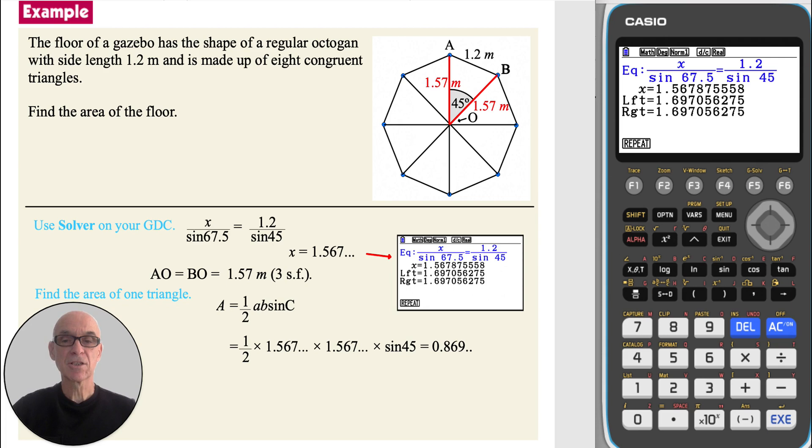And since the floor of the gazebo is made up of eight congruent triangles, multiplying this value by eight will give the area of the floor. So the area of the floor is 6.95 meters squared, correct to three significant figures.